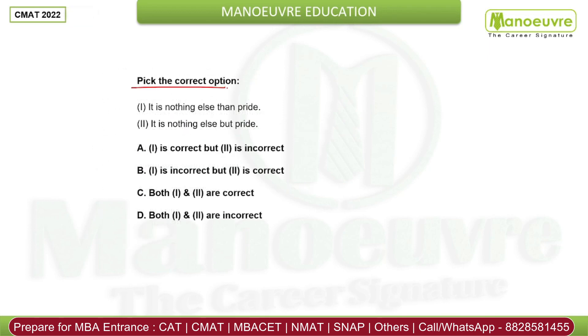Pick the correct option. 'It is nothing else than pride' — 'than' is not used with 'else'; the correct pair is 'nothing else but'. So 'It is nothing else than pride' is wrong and 'It is nothing else but pride' is right. Answer should be B.